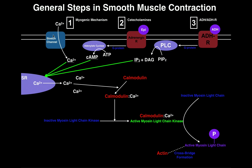If too much blood goes through a vessel, it causes the vessel to stretch, which activates the stretch channel and ultimately induces the smooth muscle to contract, constricting it back down to its original position. Whenever you have activation of a stretch channel — which is a mechanoreceptor — you'll have calcium influx into the smooth muscle cell. That's the first method by which we can activate smooth muscle.